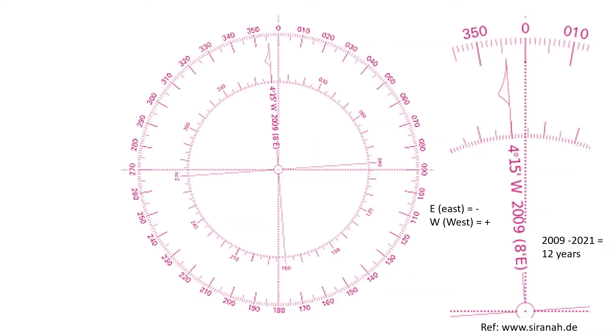So what the annual change of correction is 8 minutes east here and that was determined in 2009. So let's say if I was trying to determine the variation value now in 2021, so from 2009 to 2021 it's 12 years, right? So that 12 years will be multiplied by the annual rate of change value which is 8 minutes.